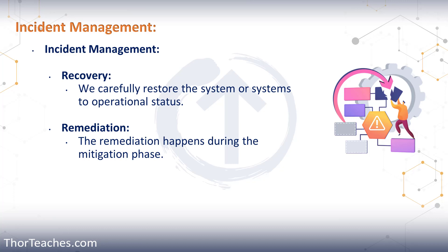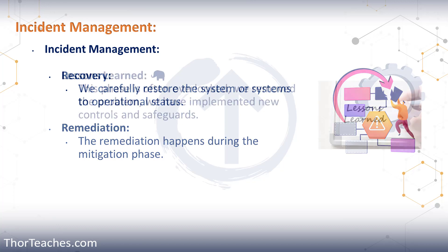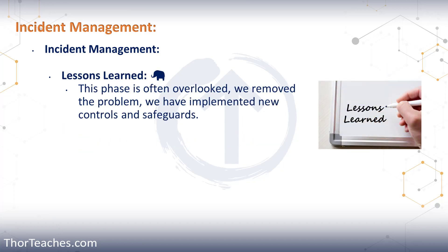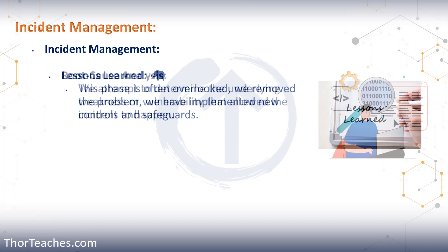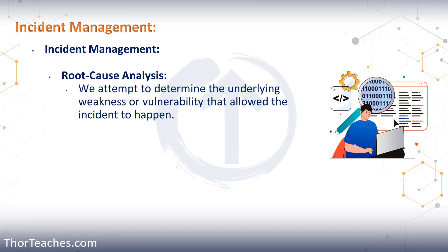Then we have remediation — that's where we have fixed all the systems that were attacked, but we need to fix the same flaw on all the other systems we have to make sure they're not vulnerable as well. And then as the last part of incident management, we have lessons learned. Here we figure out what worked well, what did not work well, what can we do better next time, and we do an in-depth root cause analysis. We can be very clear on what happened, how it happened, and whether there was anything else we could have put in place — some sort of mitigation — that even with the vulnerability present, we could have stopped the attack.